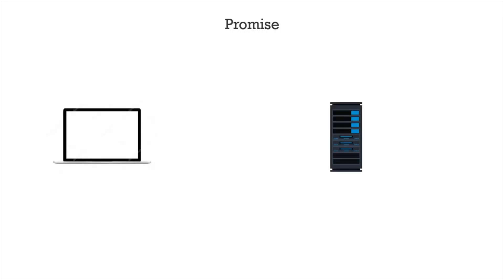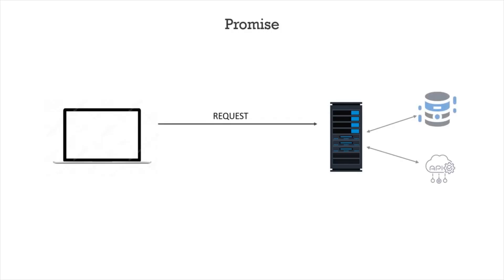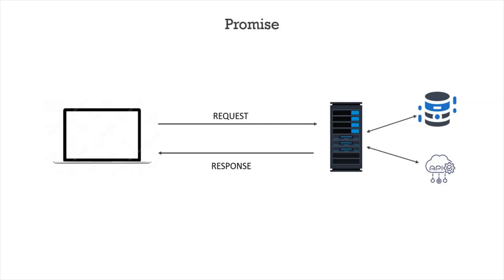Let's say we are creating an application which needs some data from the server — for example, requesting a list of users. From our application, we will send a request to the server. The server will get this data either from the database or from a web API. Let's say the data is huge — maybe 1 million users. In that case, the server will take some time to gather all the data. Once the data is available, it will create a response and send all that data at once to the client.